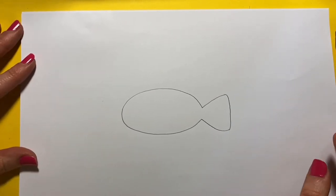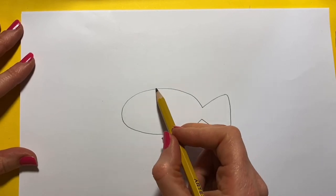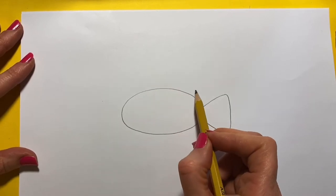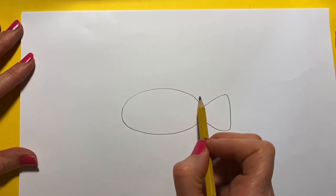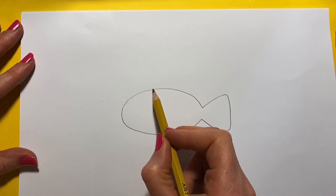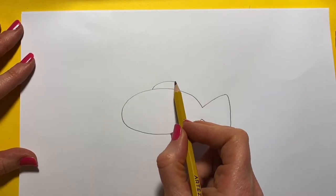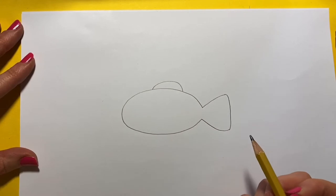Now we're going to draw the little fins at the top, so we're going to do two fins at the top, a big one and a small one. What we do is a curve, so we do a curve like that with a big one, and then a smaller curve.